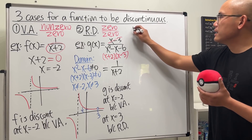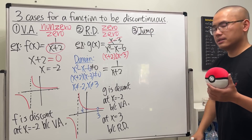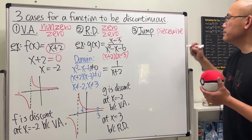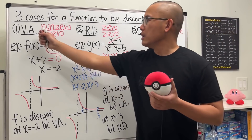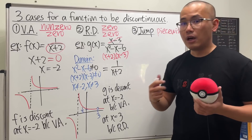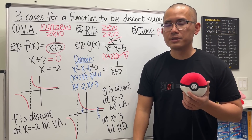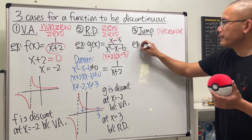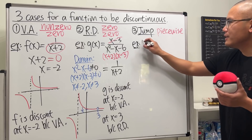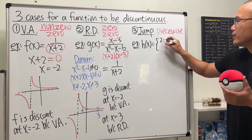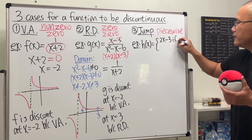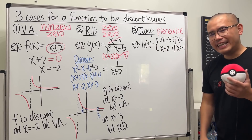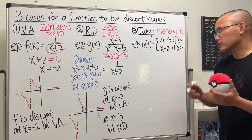Finally, for the third case: this is when we have a jump discontinuity. This usually happens with a piecewise function, though not always — it's perhaps the most common case. So let me give you a piecewise function. We'll call it h of x: it equals two x minus three if x is less than or equal to one, and x plus two if x is greater than one.